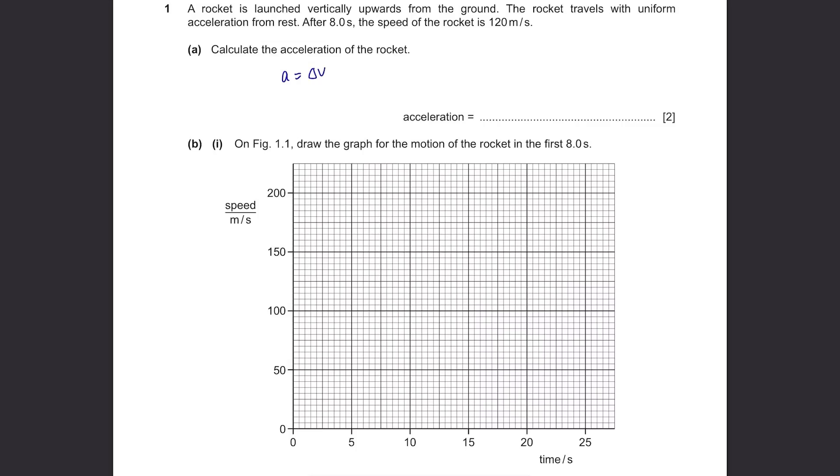Acceleration equals change in velocity over change in time. It started from rest, so it was 0 meters per second, then it reached 120, so it's 120 minus 0. The time taken is 8 seconds. So 120 over 8 equals 15 meters per second squared. Don't forget to include the unit.